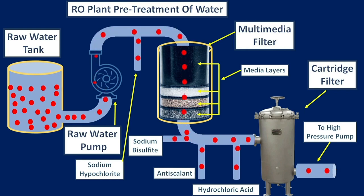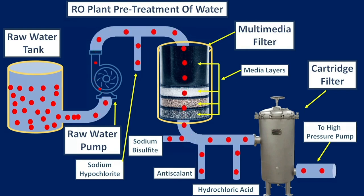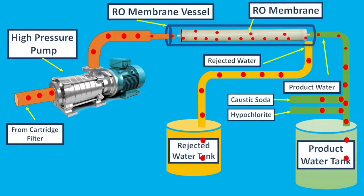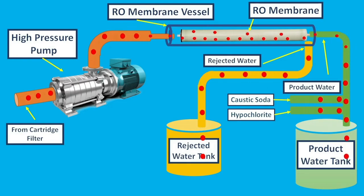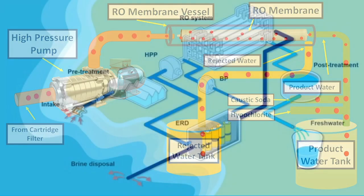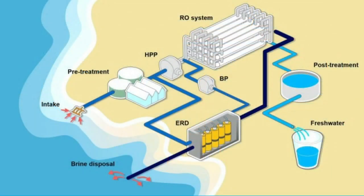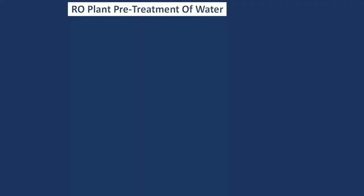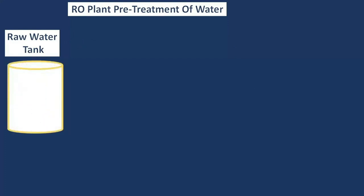In today's tutorial we will learn about the process flow of a reverse osmosis or RO plant. Reverse osmosis is used to purify water from unwanted salts, minerals, and molecules. Normally water is taken from the sea or ground and stored in a tank called the raw water tank. The storage capacity of the raw water tank depends on the capacity of the RO plant.